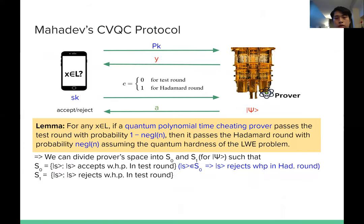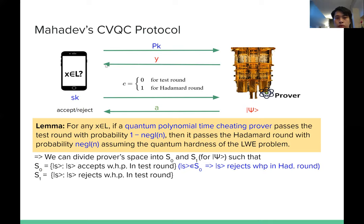Before we go to the technical details, we first briefly review Mahadev's DVQC protocol. In her protocol, the client first generates a secret key and public key, and then sends the public key to the prover. After receiving the public key, the prover generates a commitment Y and an internal state Psi, and then sends Y to the verifier. After receiving Y, the client generates a bit C, which is 0 or 1. For 0, it means you will do a test round protocol.